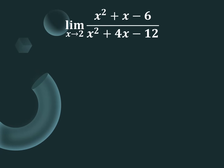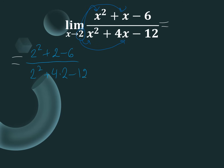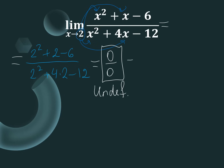Example 4 from our review. The first step is the same: take x equals 2 and substitute into the function. We get 2 squared plus 2 minus 6 over 2 squared plus 4 times 2 minus 12. Evaluating both numerator and denominator gives 0 over 0 — undefined. We have to continue. We can factor x squared plus x minus 6 in the numerator and x squared plus 4x minus 12 in the denominator.